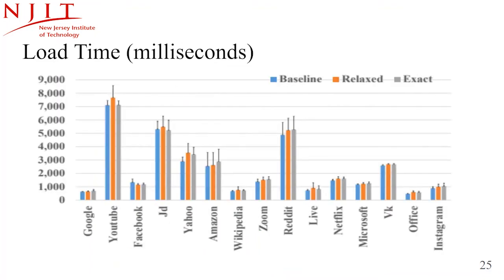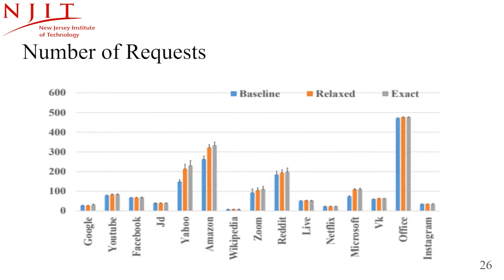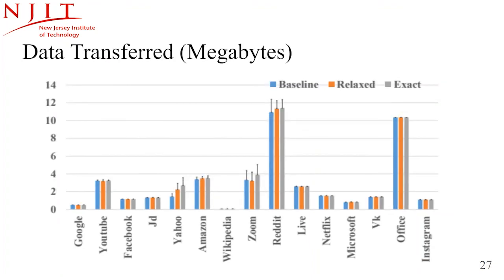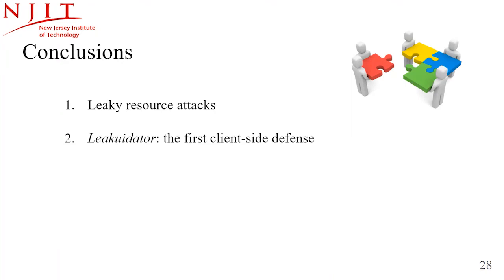We evaluated the impact of our defense on user experience by quantifying Liquidator's overhead, using the Alexa top 15 English websites. For webpage load time, the majority of websites had less than 200 milliseconds extra load time. For number of requests, the presence of the extension has minimal impact, adding less than 6% additional requests for the majority of websites. For data transferred, the impact varies by website — the amount increases for Yahoo but not for Amazon and Microsoft — showing that Liquidator's impact depends on the specifics of the third-party requests.